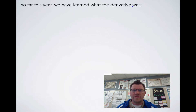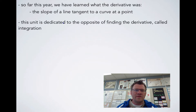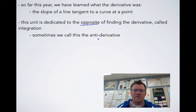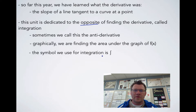So far this year, we've learned what the derivative was, and we found out that the derivative was the slope of a line tangent to a curve at a specific point. And this unit is dedicated to the opposite of finding the derivative, which is called integration — sometimes called the anti-derivative. Graphically, this is finding the area under the graph of f(x). The symbol we use for integration looks like a really tall, skinny S. It means integration.